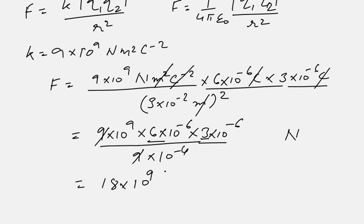10 raised to the power 9 - 6 - 6, and the 10⁻⁴ in denominator, when it comes to numerator, becomes 10⁺⁴, so we will add +4.